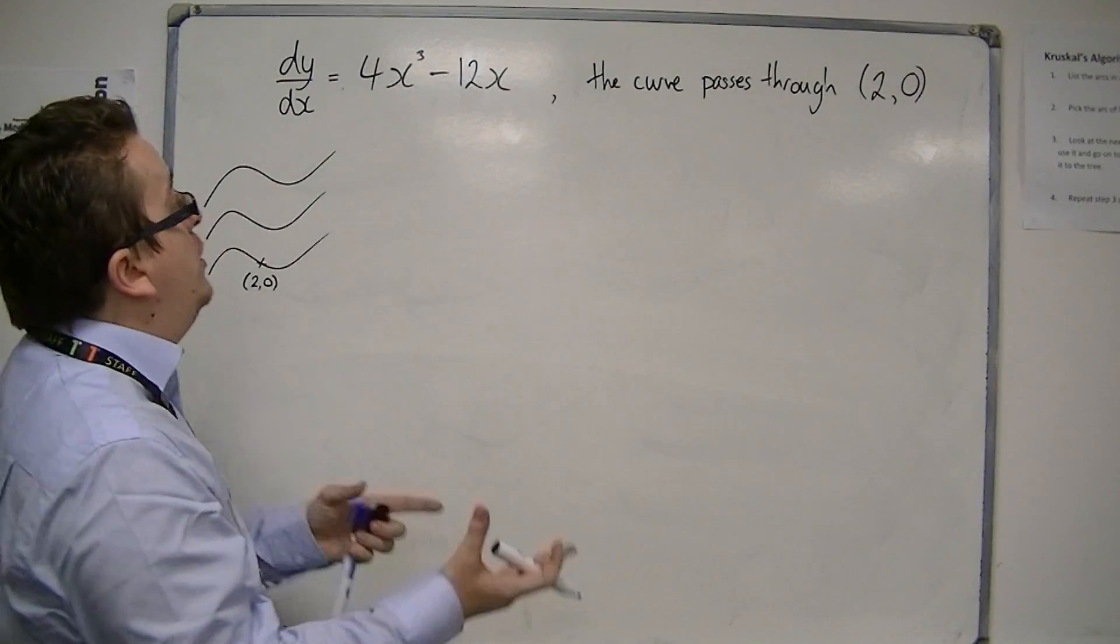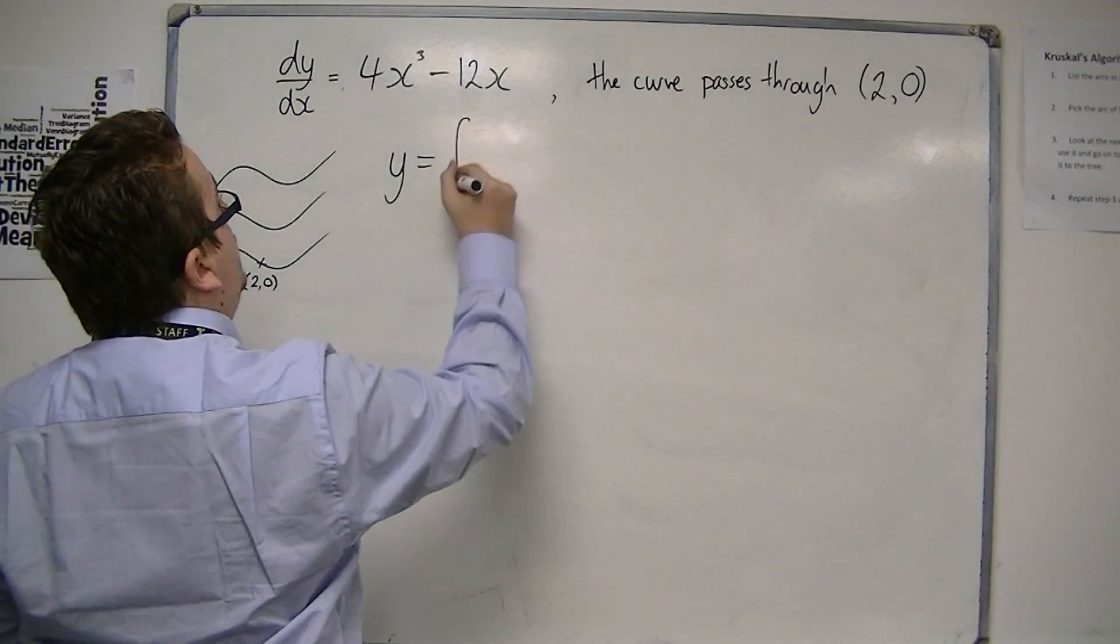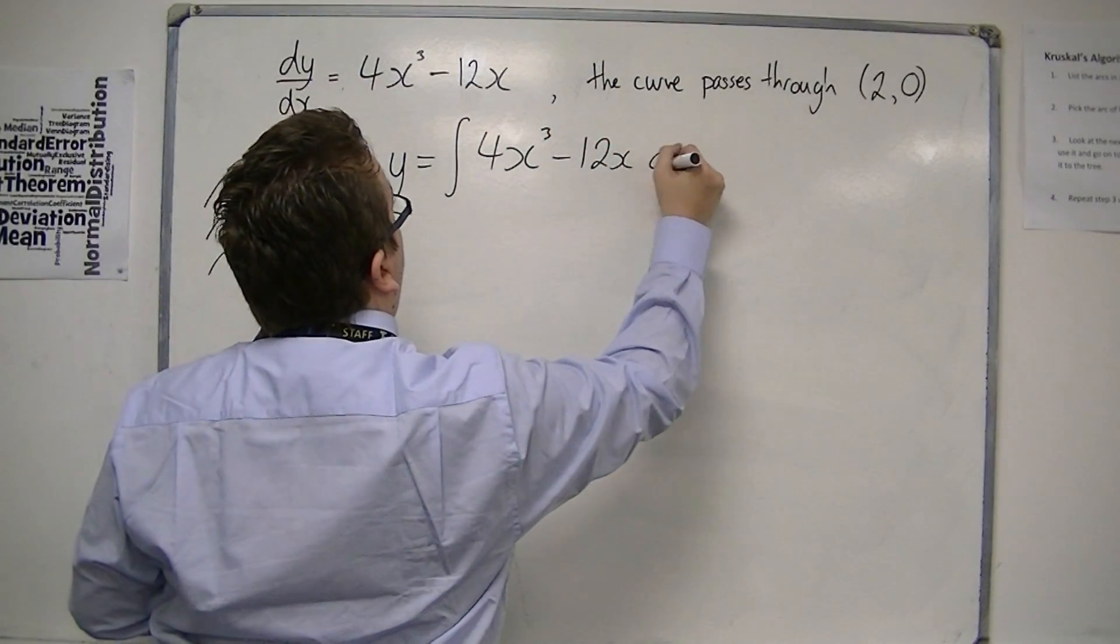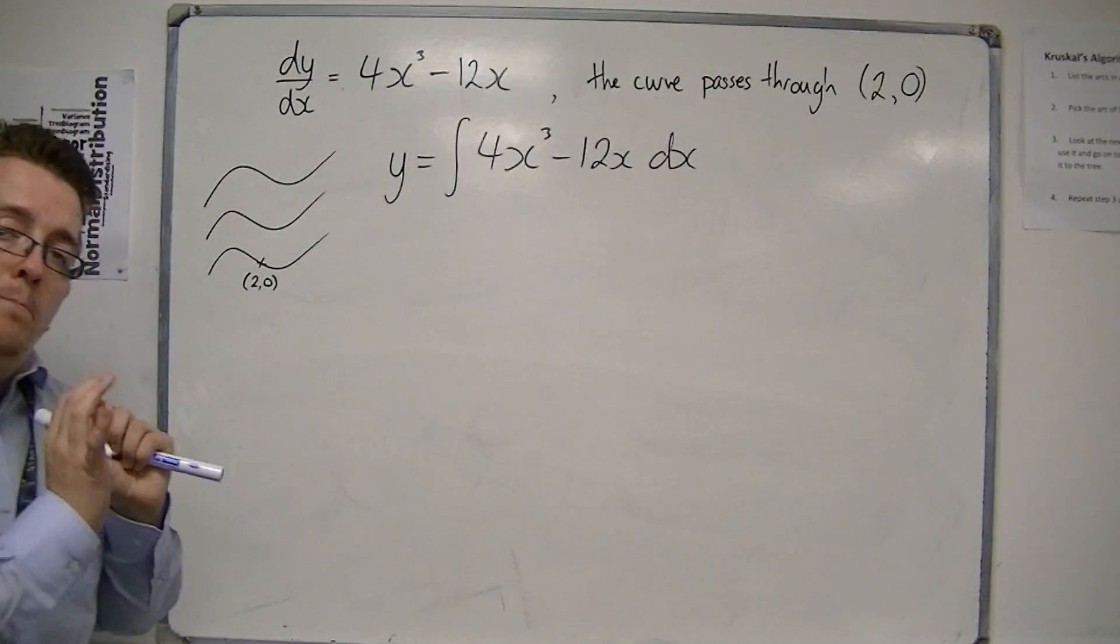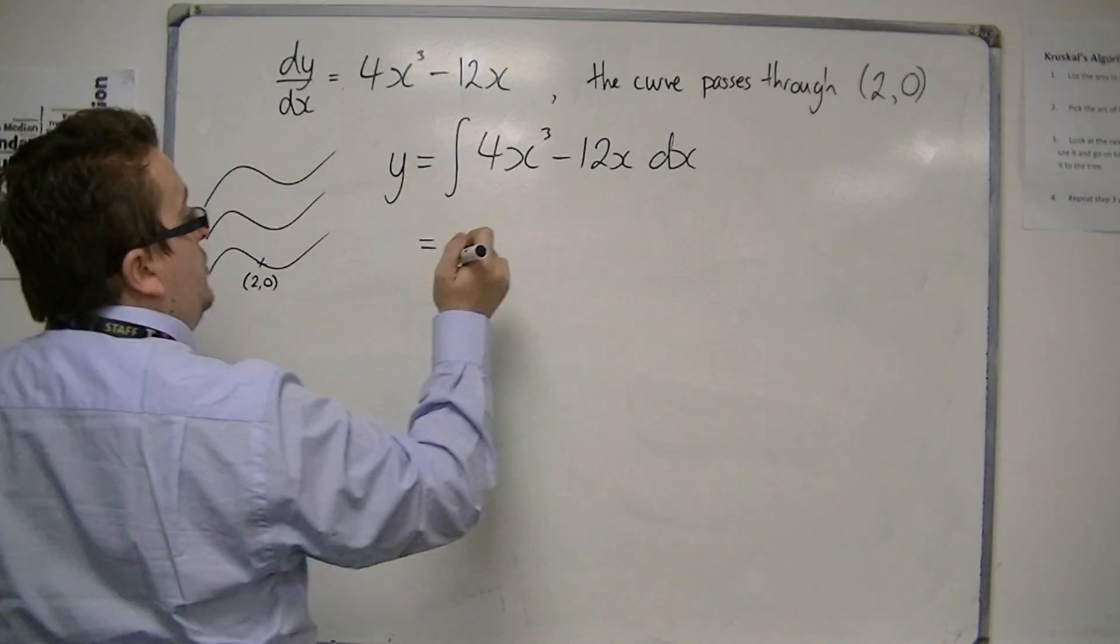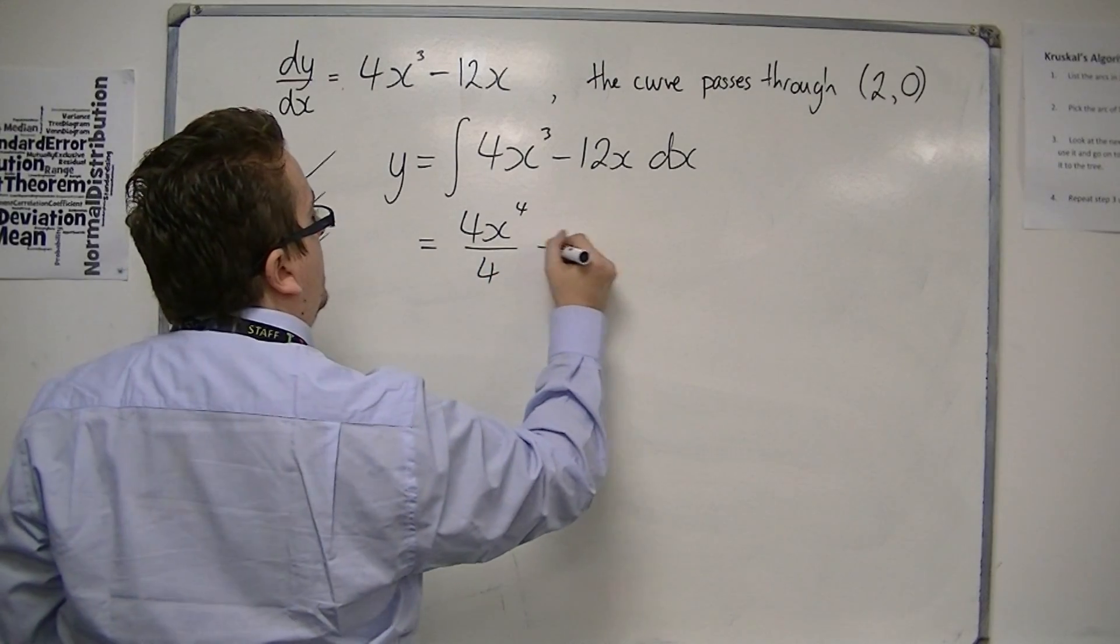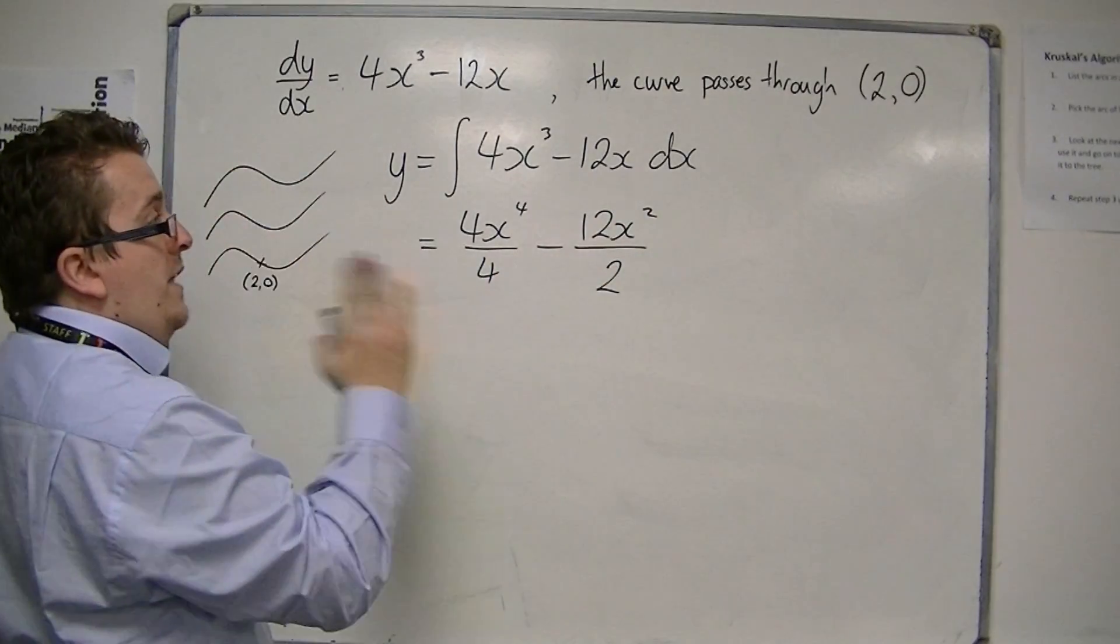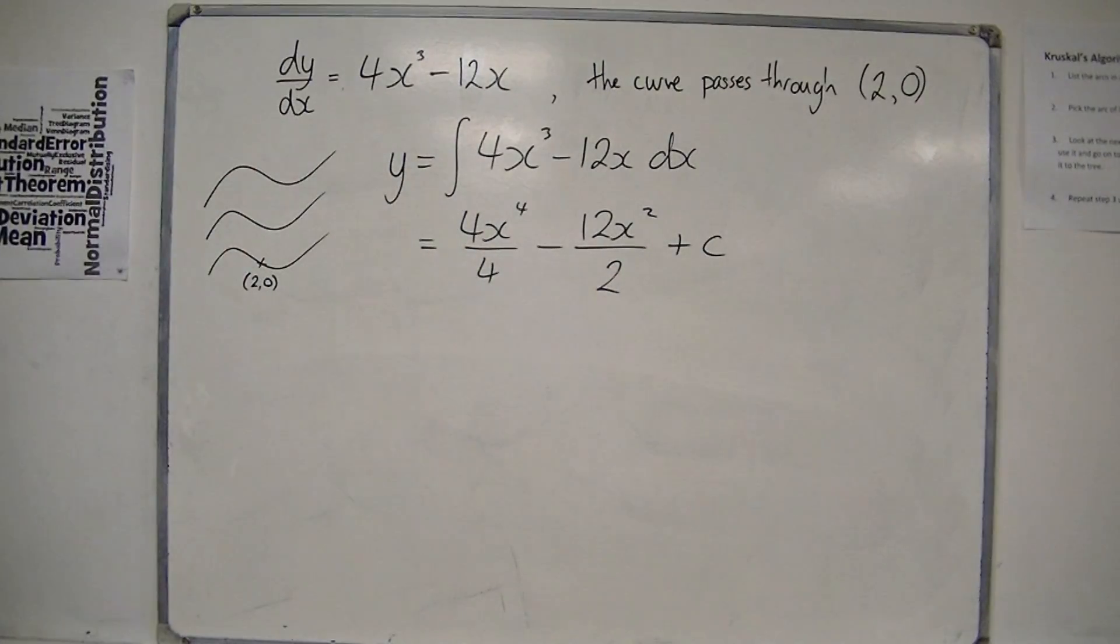The process of integration would go as follows. To integrate this we're looking at the integral of 4x cubed minus 12x dx. Remember that the integral sign and the dx are bookends and we do nothing with them. We integrate, we add 1 to the power and divide by the new power. Add 1 to the power, divide by the new power. And then we have this plus c, that constant of integration that appears at this point.